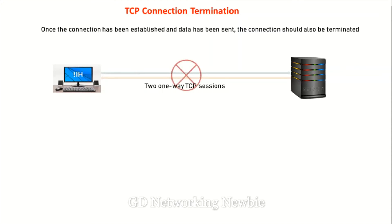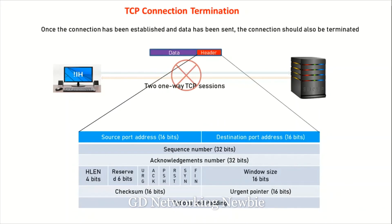To close a TCP connection, the transport layer — or the TCP protocol — uses the header part of the segment exchanged between client and server. Specifically, the TCP protocol uses the FIN flag and the acknowledgement flag available in the TCP header.